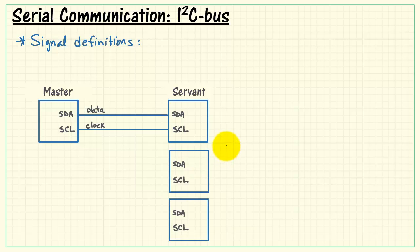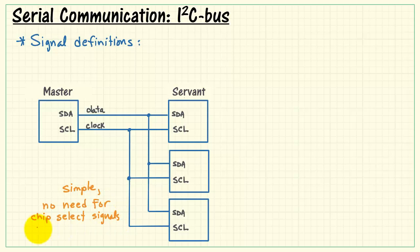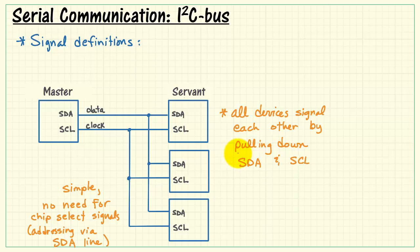If you had multiple devices connected for a single master, you simply join all of the SDA lines together and all the SCL lines together. It's a very simple standard in terms of wiring. No need for additional chip select signals of any sort. All of the addressing of the peripheral devices is handled via the SDA line.